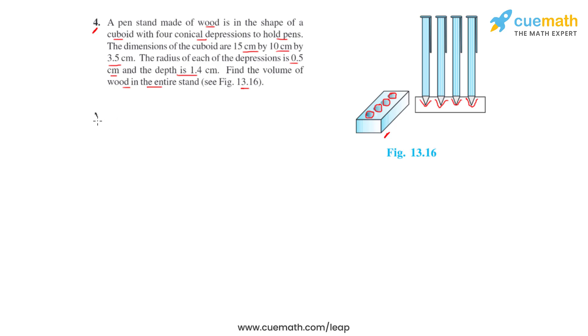So with this information we can write that the volume of wood in the pen stand will be equal to the volume of the cuboidal block that we have minus four times the volume of the conical depressions that are made so that the pens can stand in them.